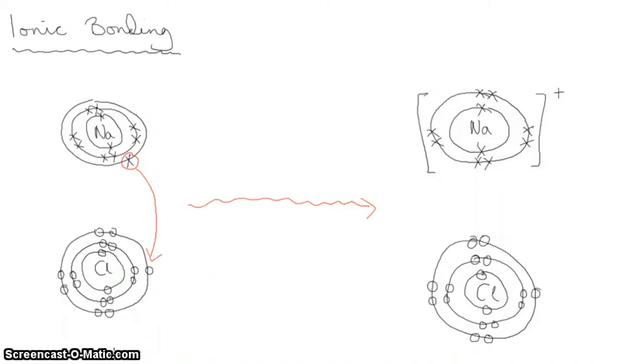And the extra one that's come in has come in from the sodium atom. We use different symbols to show that this one electron here has come in from a different atom.